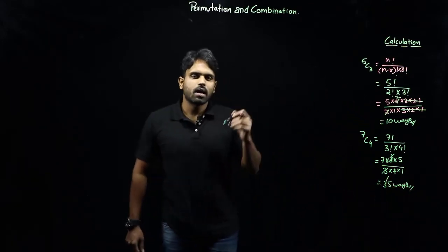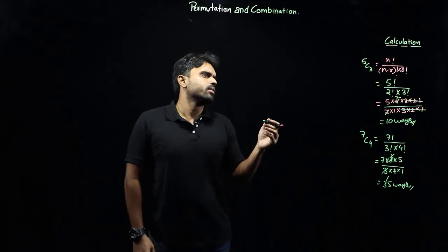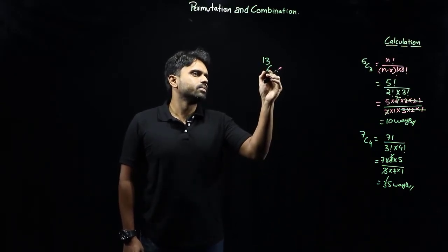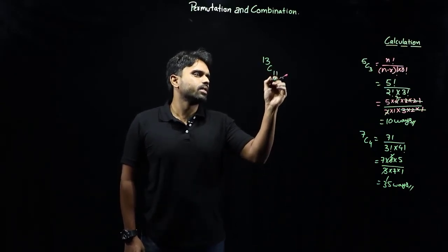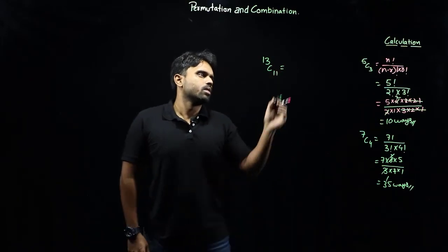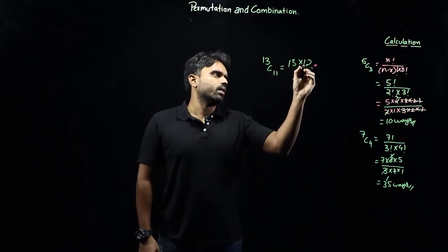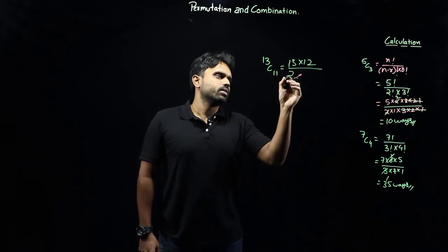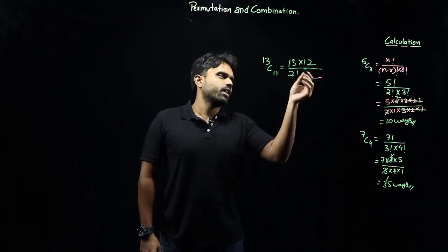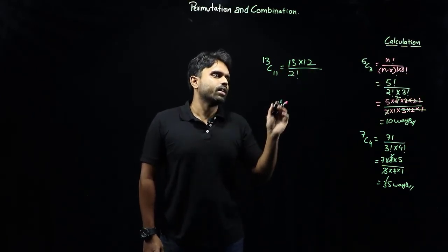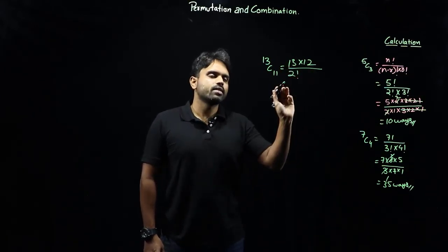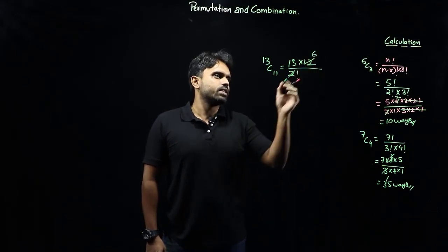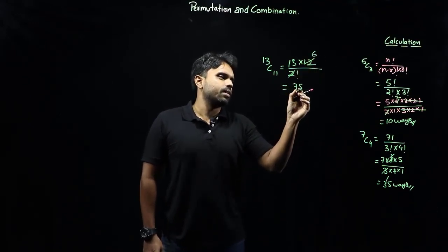For 13C11: using the identity, 13C11 = 13C2 = 13×12 / (2×1) = 156 / 2 = 78 ways.